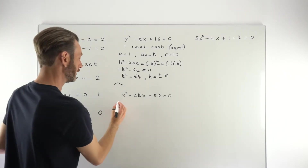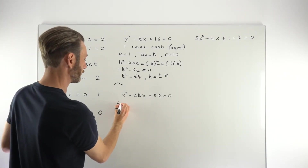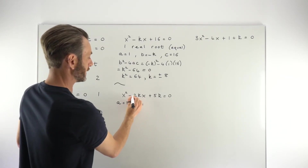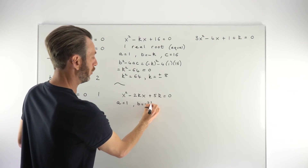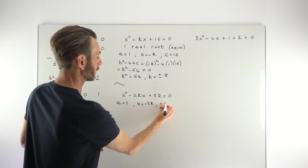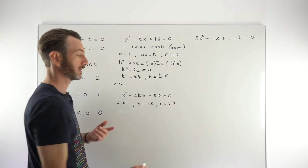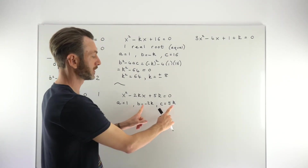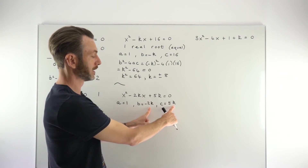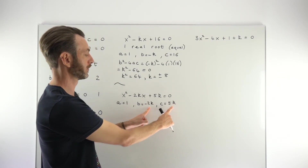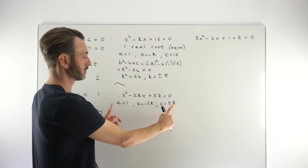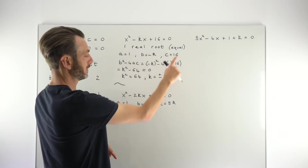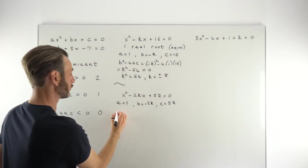Moving on to the next example. Defining a, b, and c: the a value is 1, the b value is -2k (make sure you get all of that), and the c value is 5k. It's perfectly fine and quite common for two or even three of the a, b, c values to contain k.